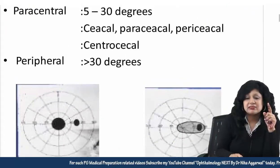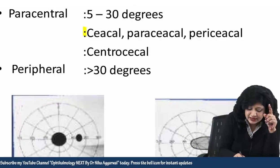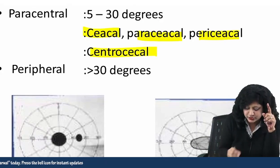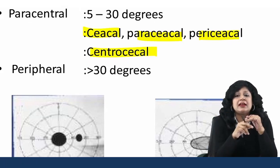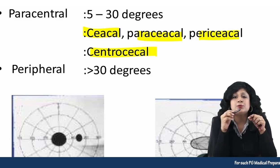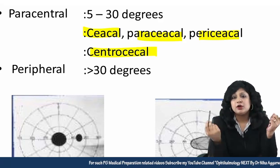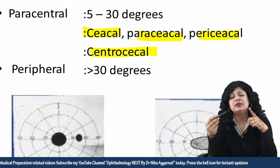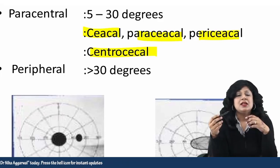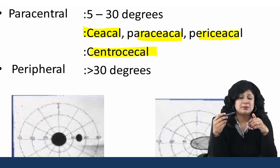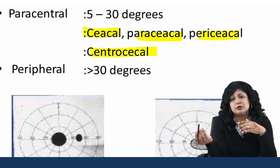There are certain terms used with respect to paracentral. I have the cecal, paracecal, pericecal, and centrocecal. Cecal means the blind spot. If the scotoma is immediate to the blind spot, it is paracecal; then afterwards pericecal; and if it is involving the blind spot, then it is centrocecal. For example, in optic neuritis we see centrocecal scotomas because there will be involvement of the blind spot.